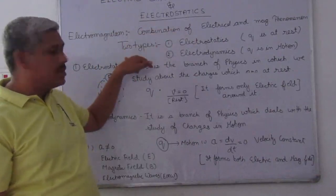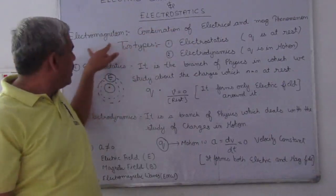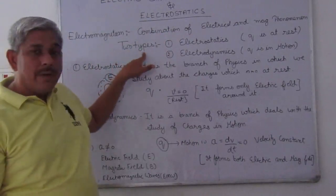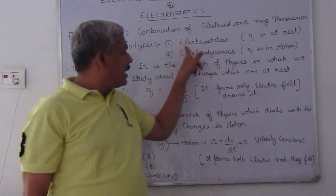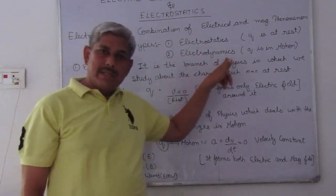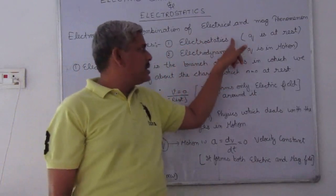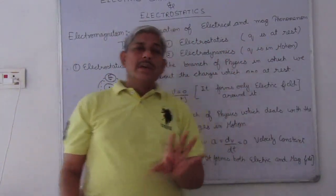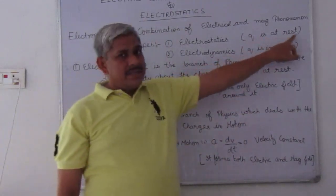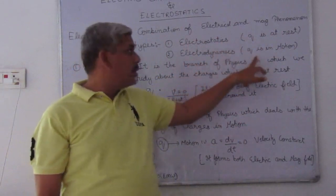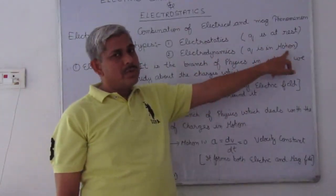In this, we are going to study two types of electromagnetism property. Electromagnetism are of two types: first is electrostatics and second is electrodynamics. Electrostatics means when charge Q is at rest. When Q is in motion, that means motion means dynamics.